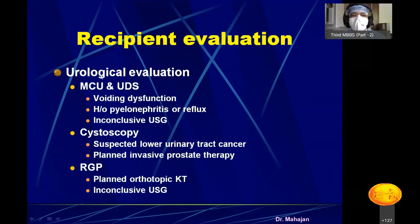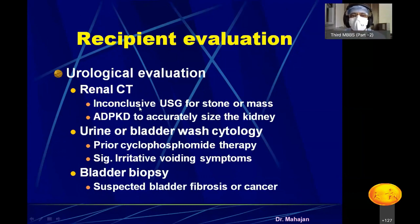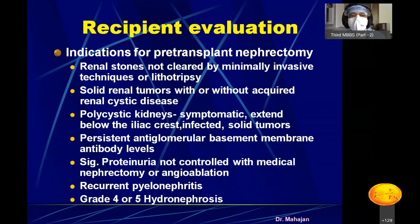You also have to urologically evaluate the patient. If the patient has a neurogenic bladder, you perform a micturating cystourethrogram (MCU) or a urodynamic study to assess bladder condition. If required, cystoscopy is done to check for lower urinary tract cancer or prostate cancer, and RGP in selected patients. CT scan for bladder wash, to rule out CA bladder, and bladder biopsies may also be required.